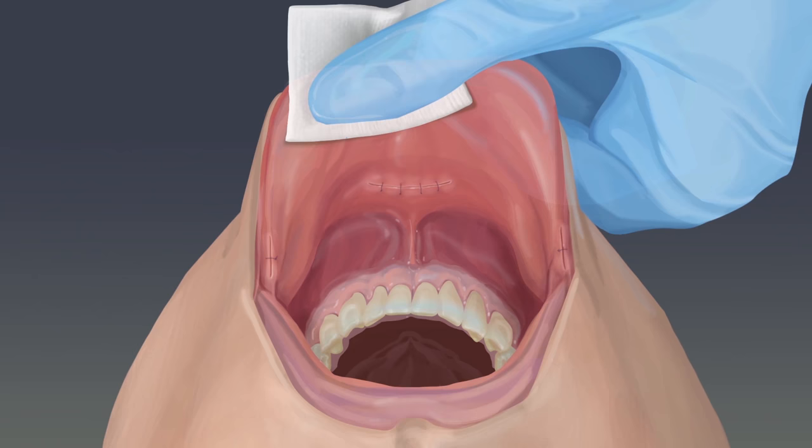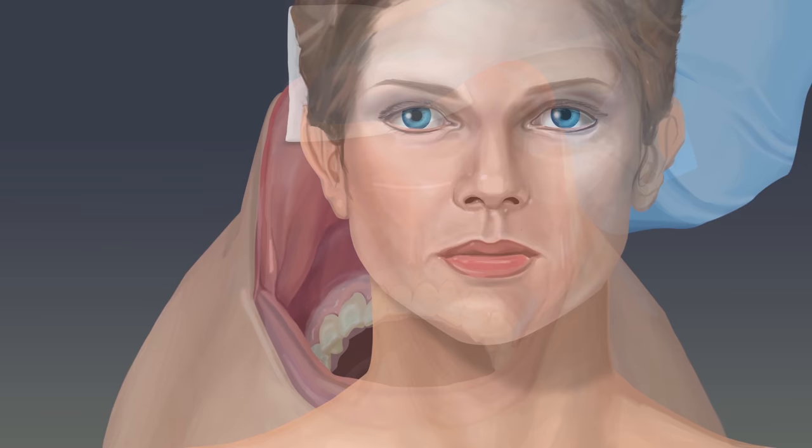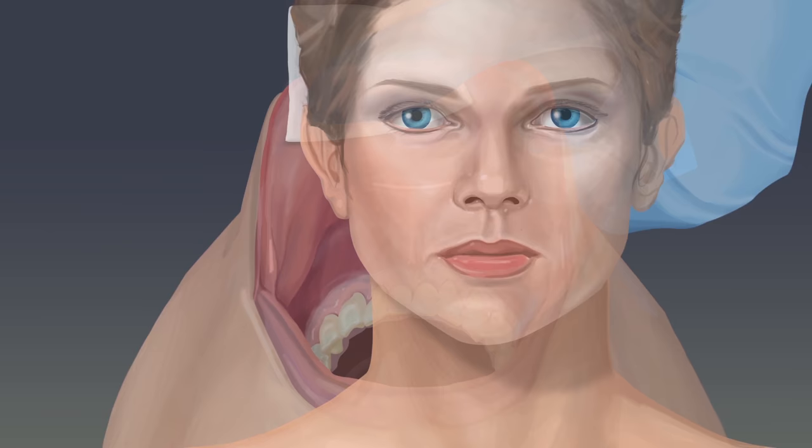At the end, diseased tissue is placed in a small pouch to remove it. Once the procedure is over, absorbable sutures are used. A pressure dressing is placed overnight. Once healed, patients will have small, invisible scars inside the mouth.